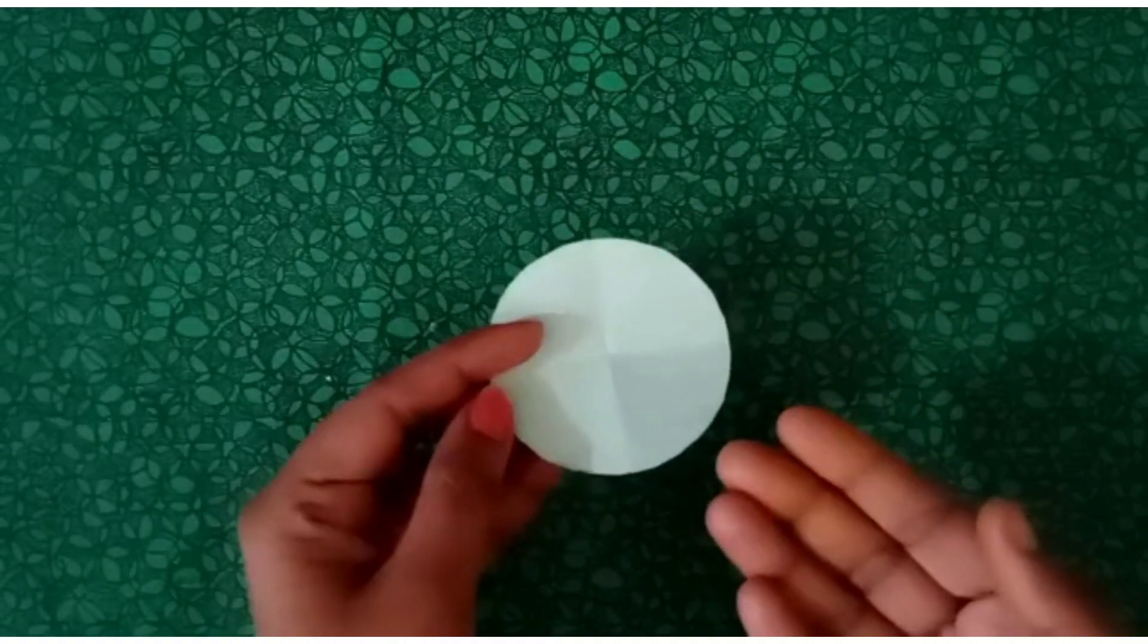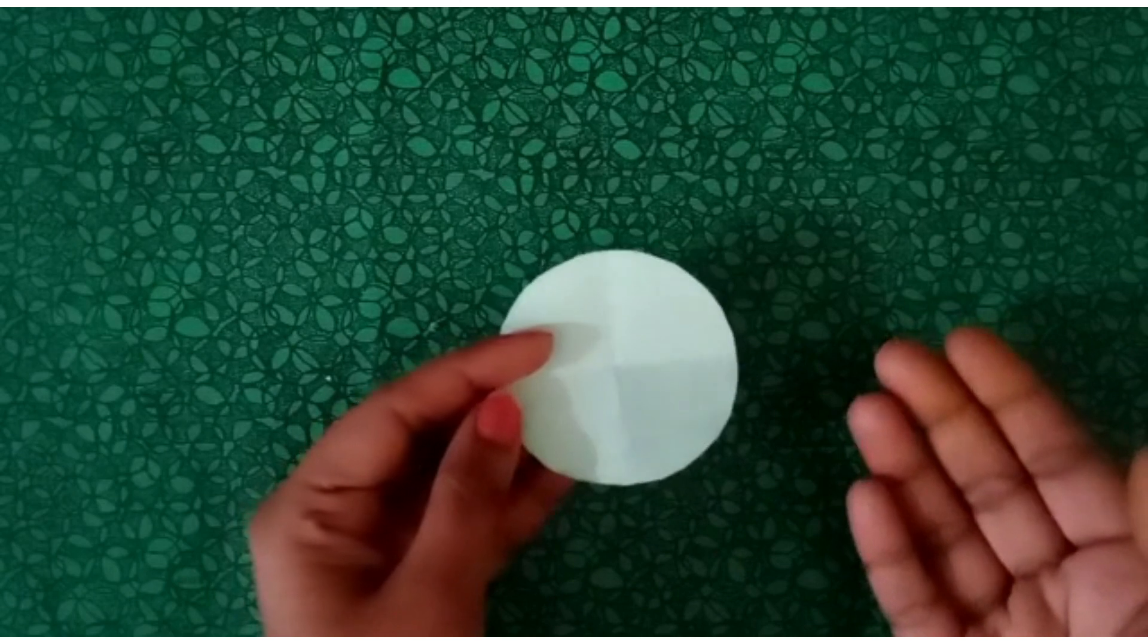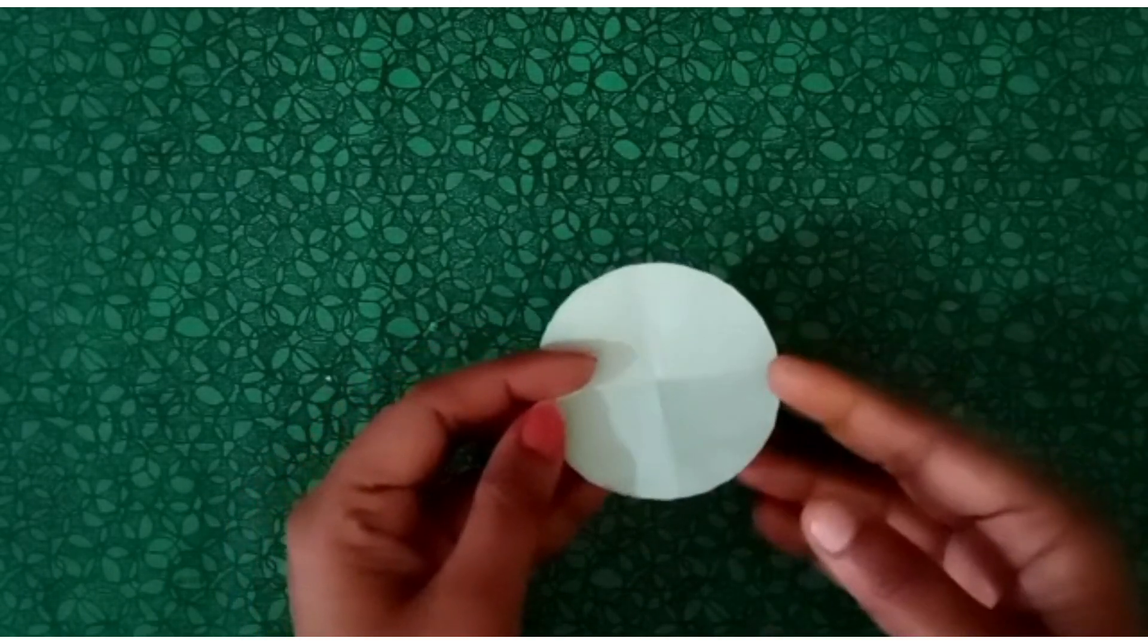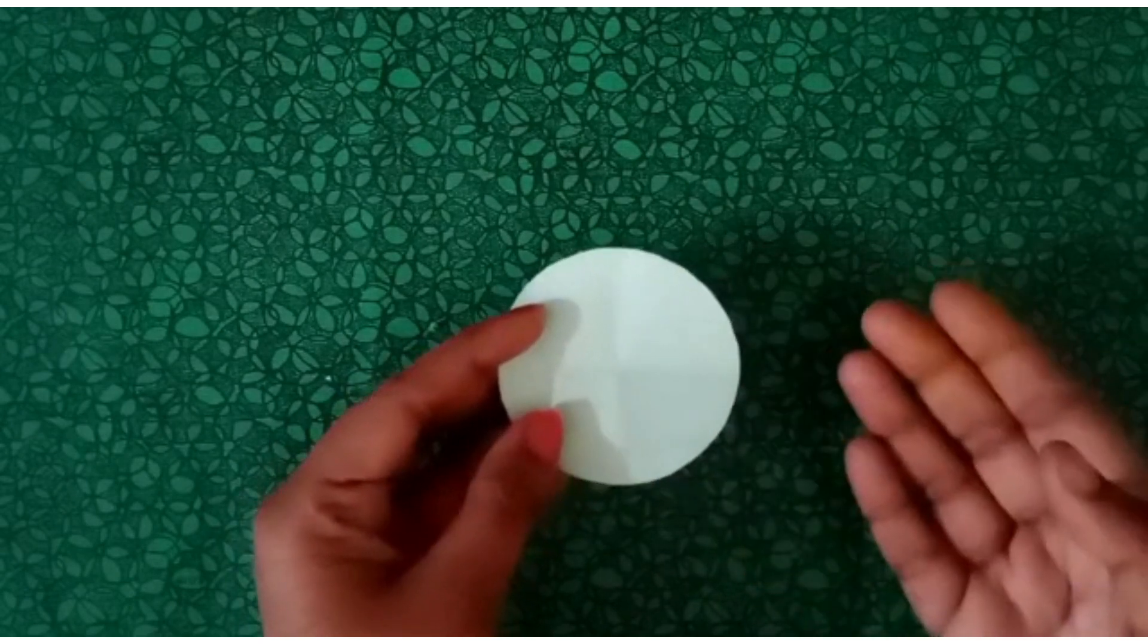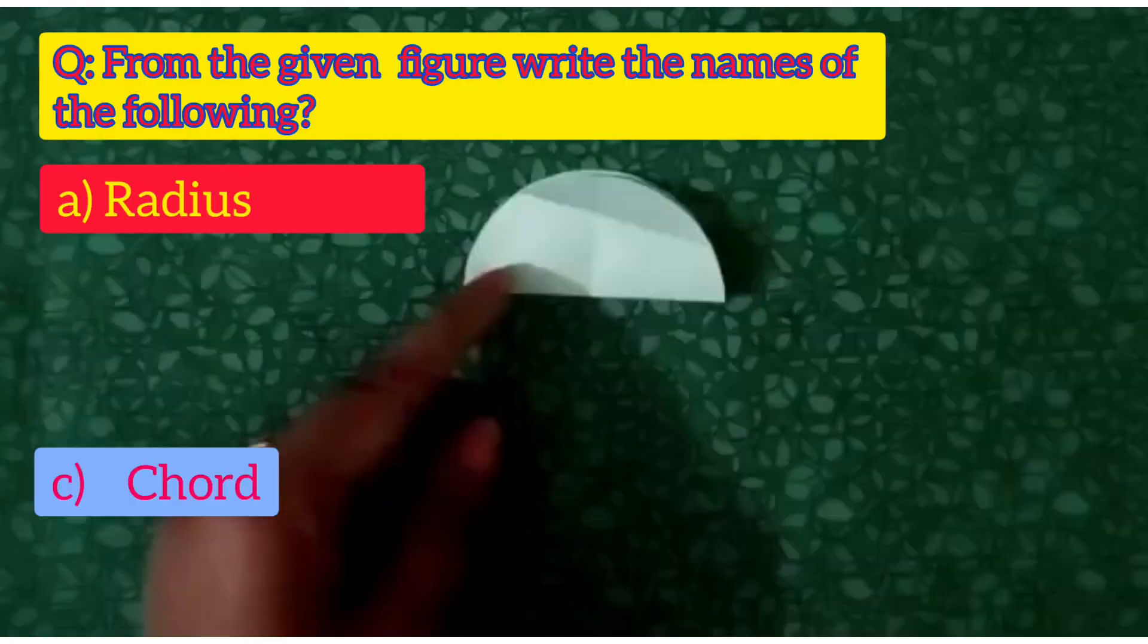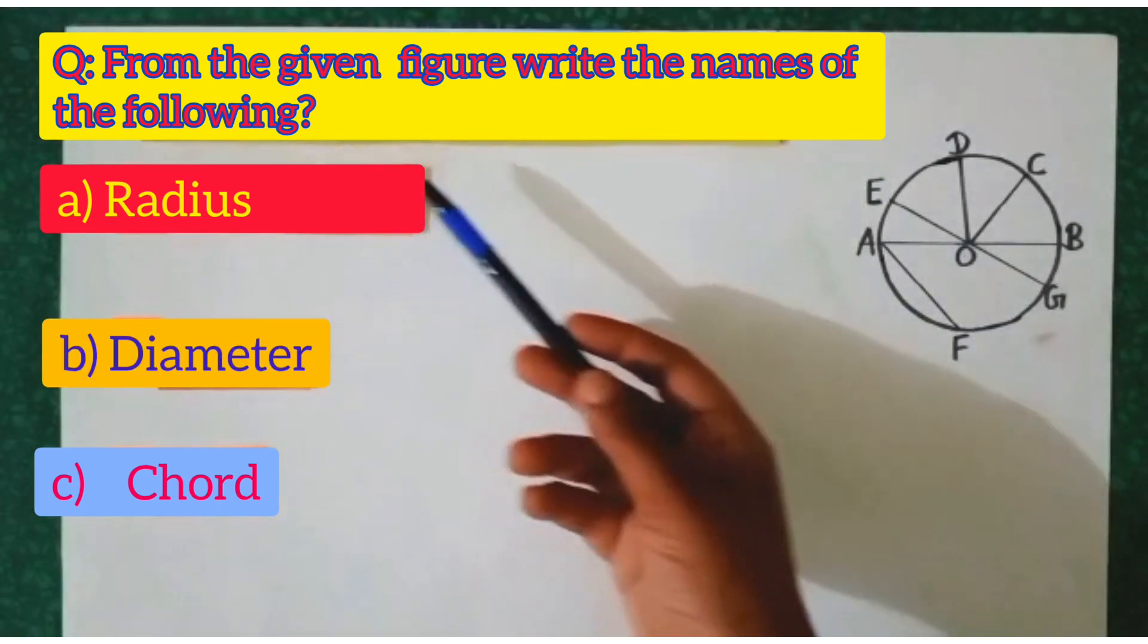So dear students, with the help of circular paper, you have learned about diameter, radius and chord. Now let's solve the questions based on it. So students, let's solve question number 1.